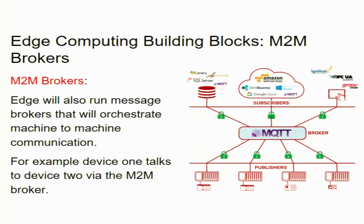Another edge computing building block is the machine-to-machine broker. The edge will run a message broker that orchestrates machine-to-machine communications. For example, device 1 talks to device 2 via a machine-to-machine broker. Earlier these kinds of brokers were supported by the cloud, but now they can be a basic building block of edge computing as well.